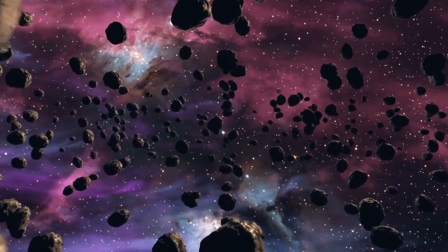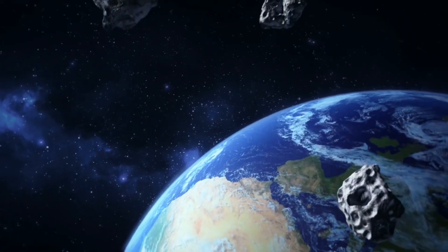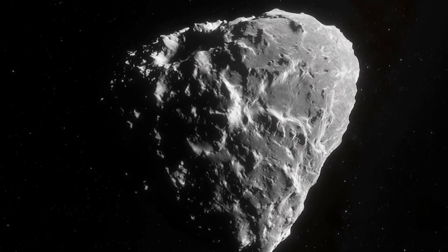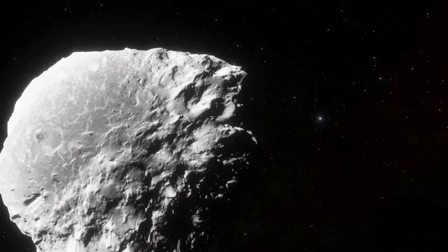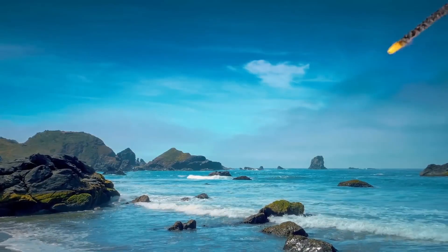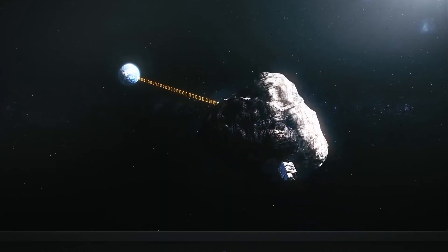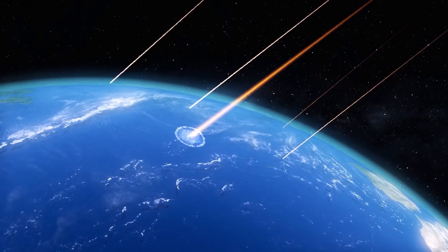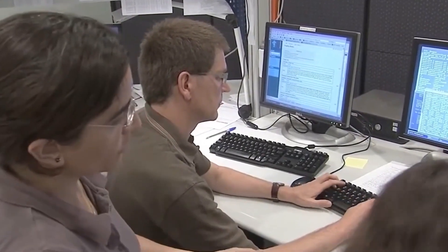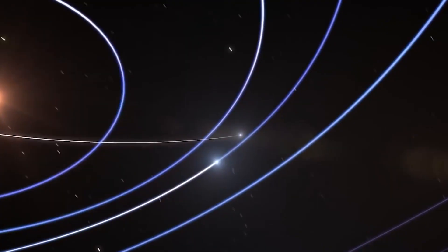As already mentioned, the probability of Apophis falling to Earth is extremely small. Nevertheless, since the discovery of the asteroid in 2004 and the awareness of the danger it poses, scientists have been thinking through a variety of ways to get rid of this danger. The most unreasonable option is the one that was once proposed in the movie Armageddon: to blow up an asteroid with a powerful bomb. In this case, instead of one large asteroid, several dozen or even hundreds of smaller ones will fall to Earth, and it is still unknown what is scarier.